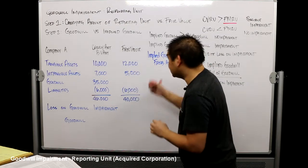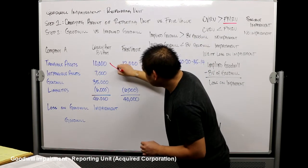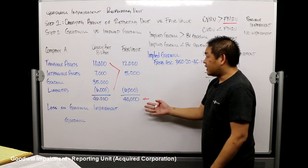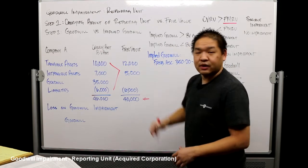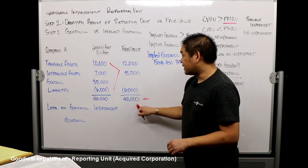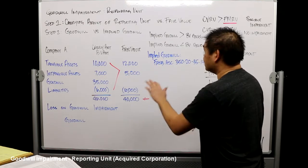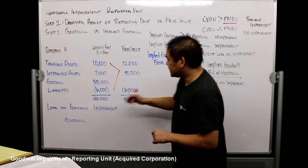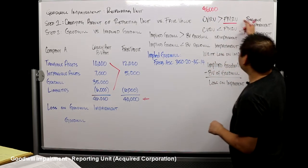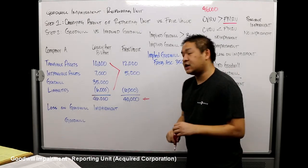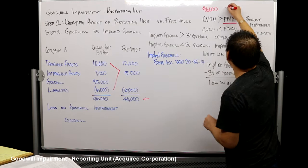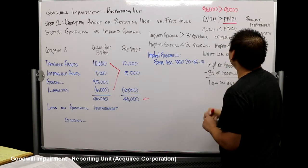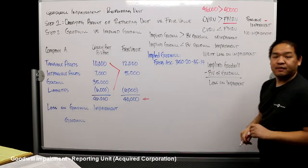For step one, we take the carrying value of the entire entity and compare it to the fair market value of what we can get for the company. The carrying value is 10 + 7 + 35 − 6 = $46,000. The fair market value of the reporting unit — what we'd get if we sold it — is $40,000. Since carrying value ($46,000) is greater than fair market value ($40,000), there is a possible impairment, so we proceed to step two.